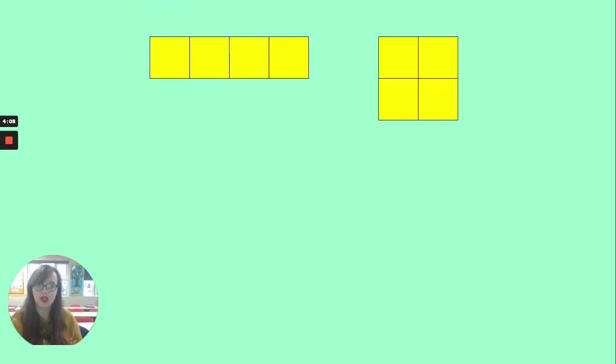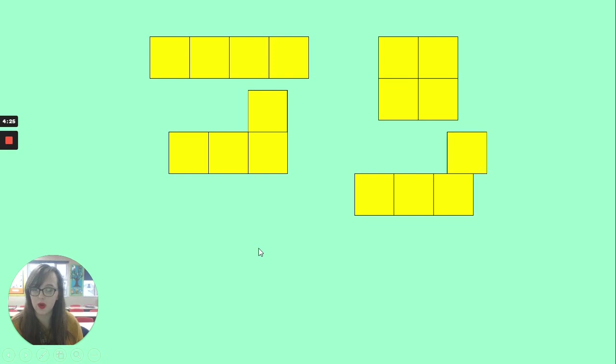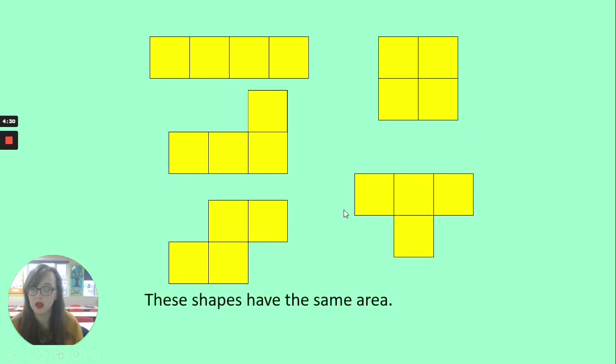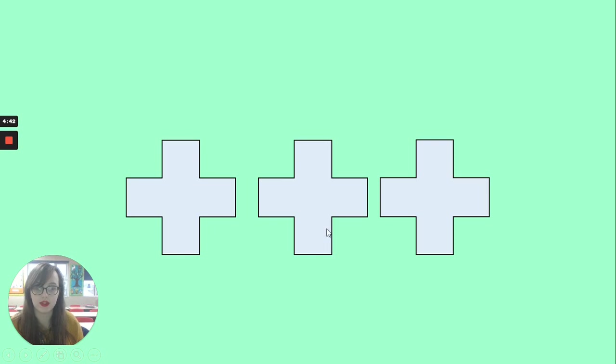So here are some different shapes made up of yellow squares. And so far, all of them are made up of four yellow squares, but all of the shapes are really different. And just by moving the squares around, I can change the shape. But all of them are still made of four squares. I can move them anywhere. I can make all sorts of strange shapes. But all of them have the same area, the same distance inside. They are all four squares big. The area is four squares.